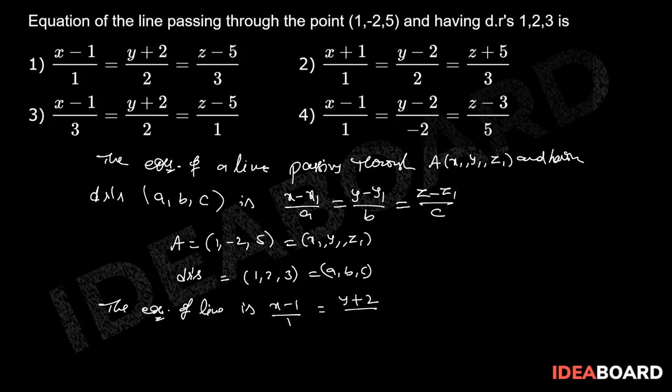Y plus 2 by 2 equals Z minus 5 by 3. The correct answer is the first option.